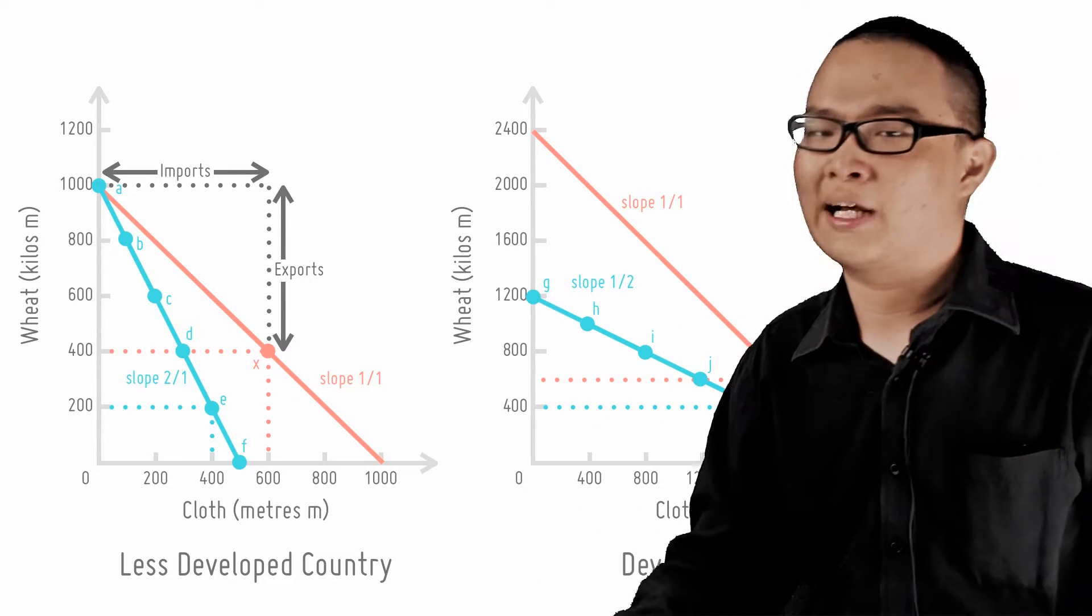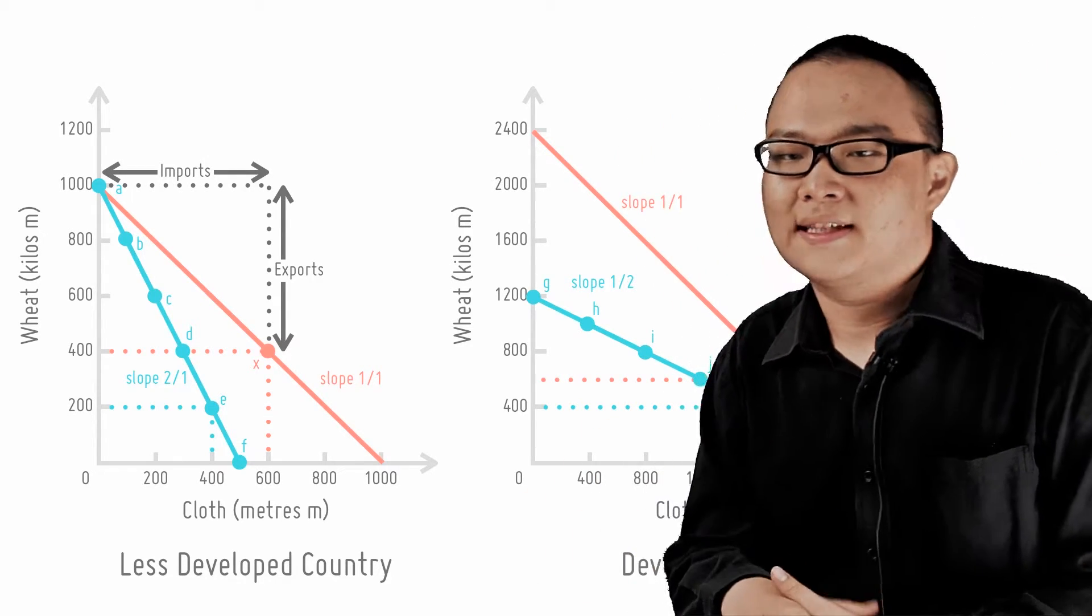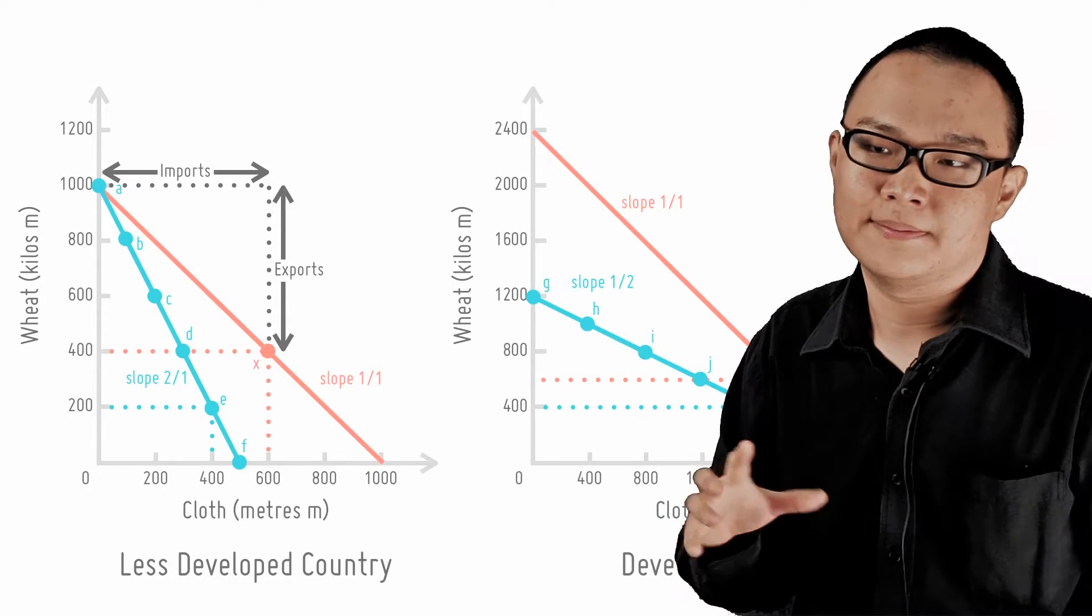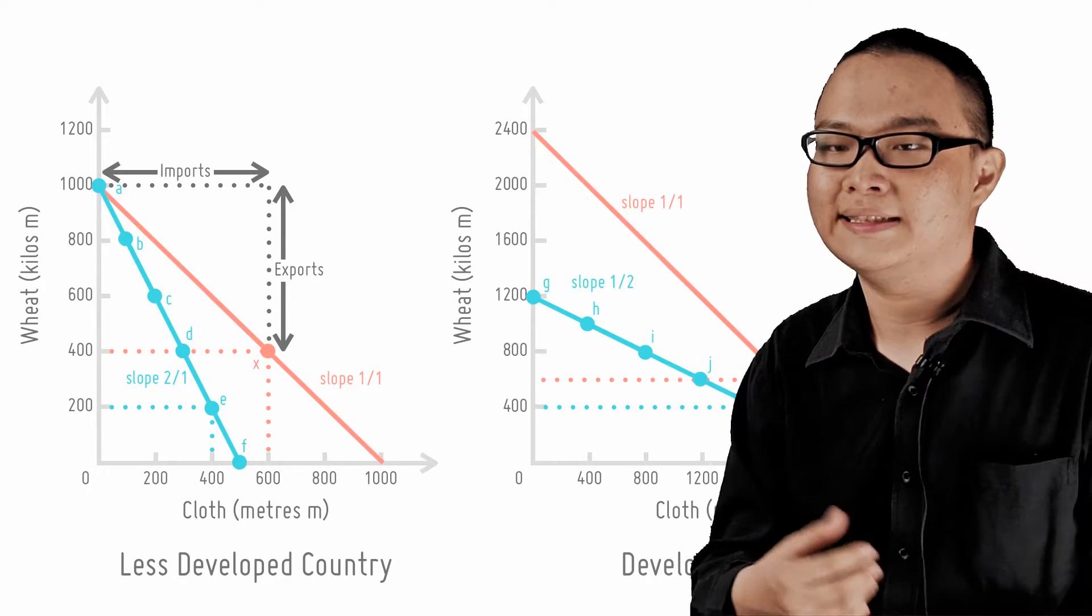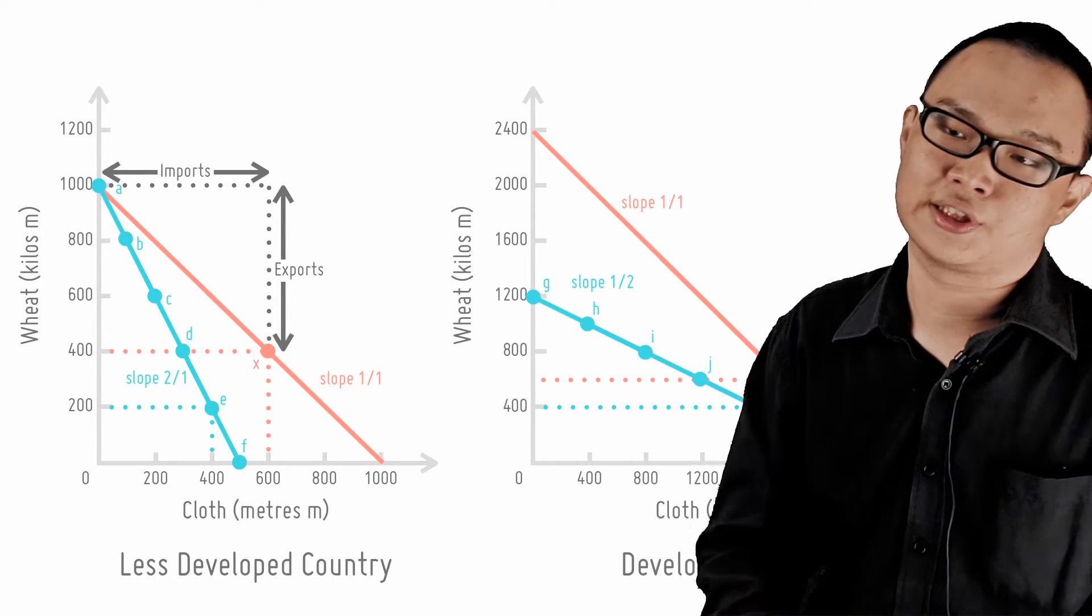We can show this on a diagram. First, let us consider the case of a less developed country and a developed country. The LDC has a comparative advantage in wheat production, and the DC enjoys a comparative advantage in cloth production.